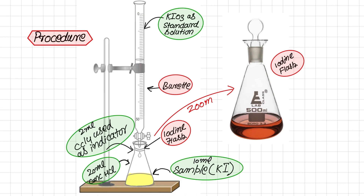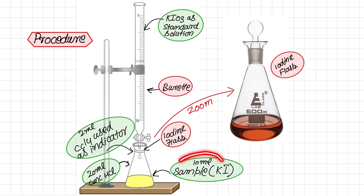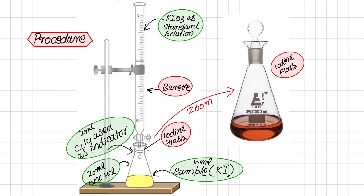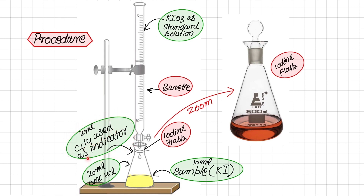In the iodine flask, we have added 10 mL of the sample solution of potassium iodide, then approximately 20 mL of concentrated HCl, and finally about 2 mL of carbon tetrachloride, which acts as the indicator. This completes the experimental setup of this titration.